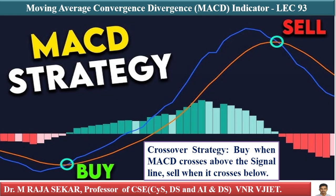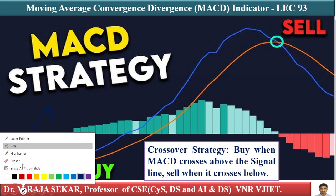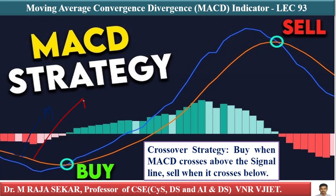The simple strategy here is when to buy and when to sell. When the MACD line crosses above the signal line, that is bullish — you buy. When the MACD line crosses below the signal line, that is bearish — you sell.